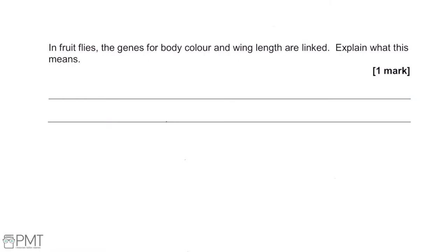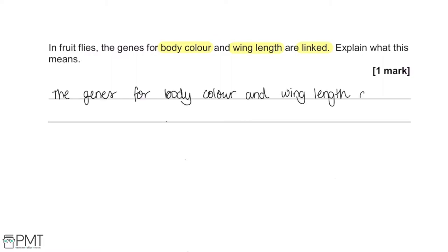In fruit flies, the genes for body colour and wing length are linked. Explain what this means. If two genes are linked, it means they both lie on the same chromosome. So the genes for body colour and wing length are on the same chromosome.